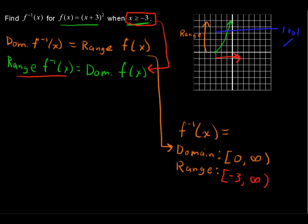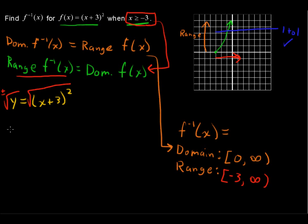The process for finding an inverse is like this: you set the function equal to y, so y equals (x+3)². Now you're going to solve for x, and to do that we're going to take the square root of each side. When you take the square root to solve, you say plus or minus — so plus or minus the square root of y equals x plus 3.